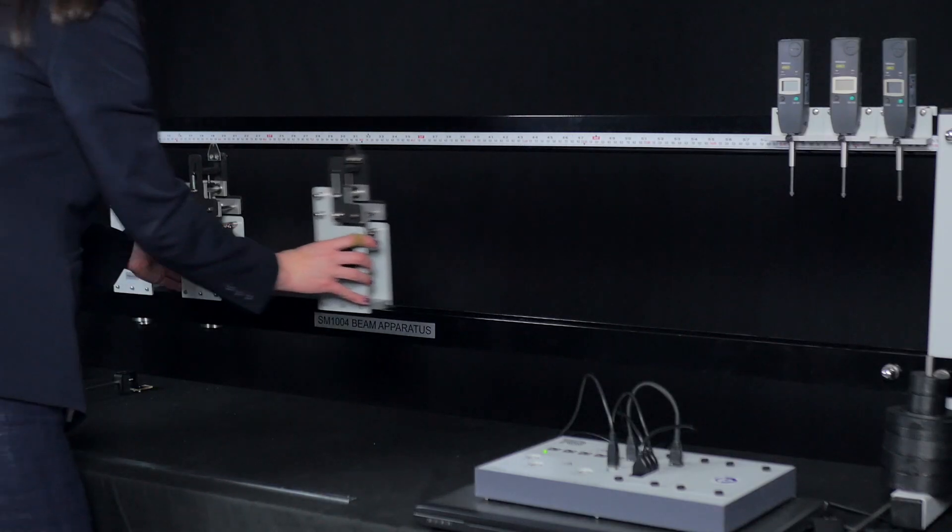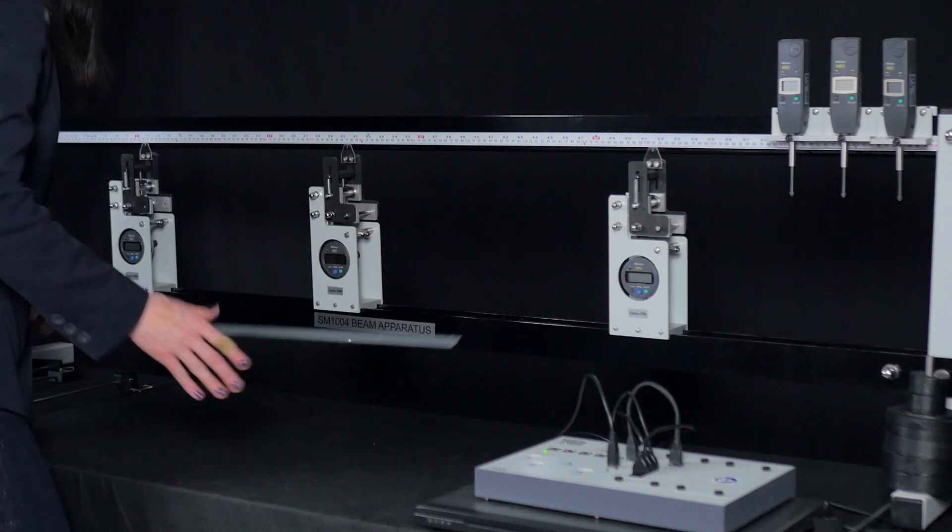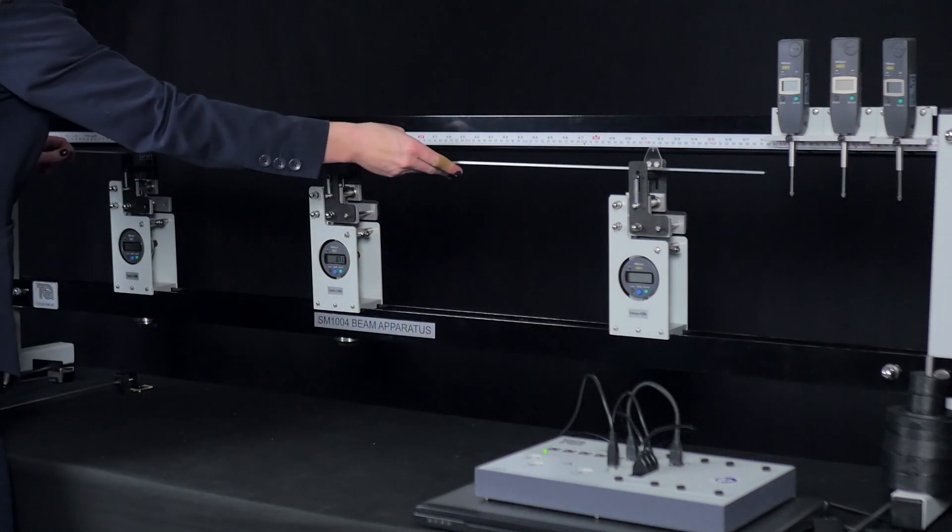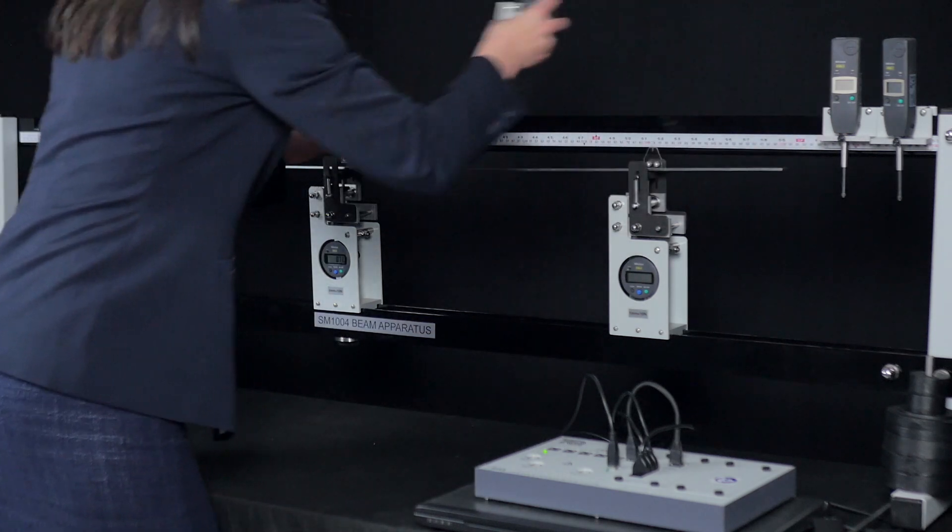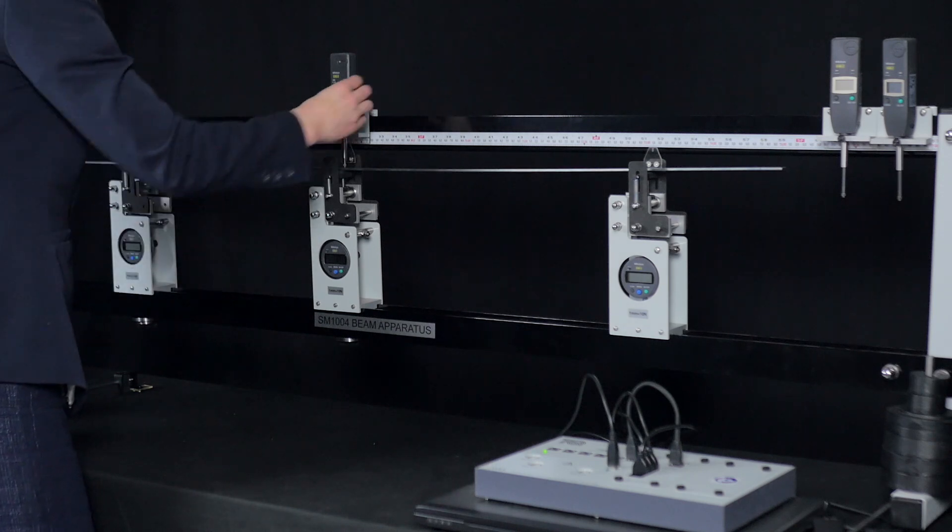For simply supported beam experiments, the load cells support the beam and measure any reaction force if needed, or they just work as support props. The weight hanger loads the beam at a fixed place, and then the deflection indicator measures how much the beam bends at a given point.